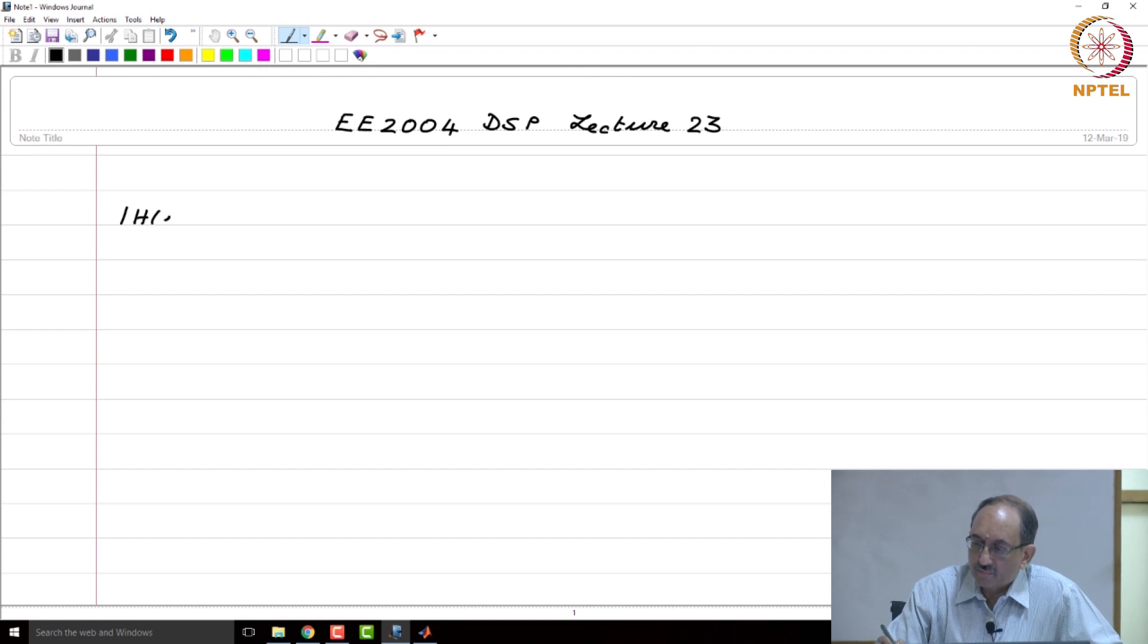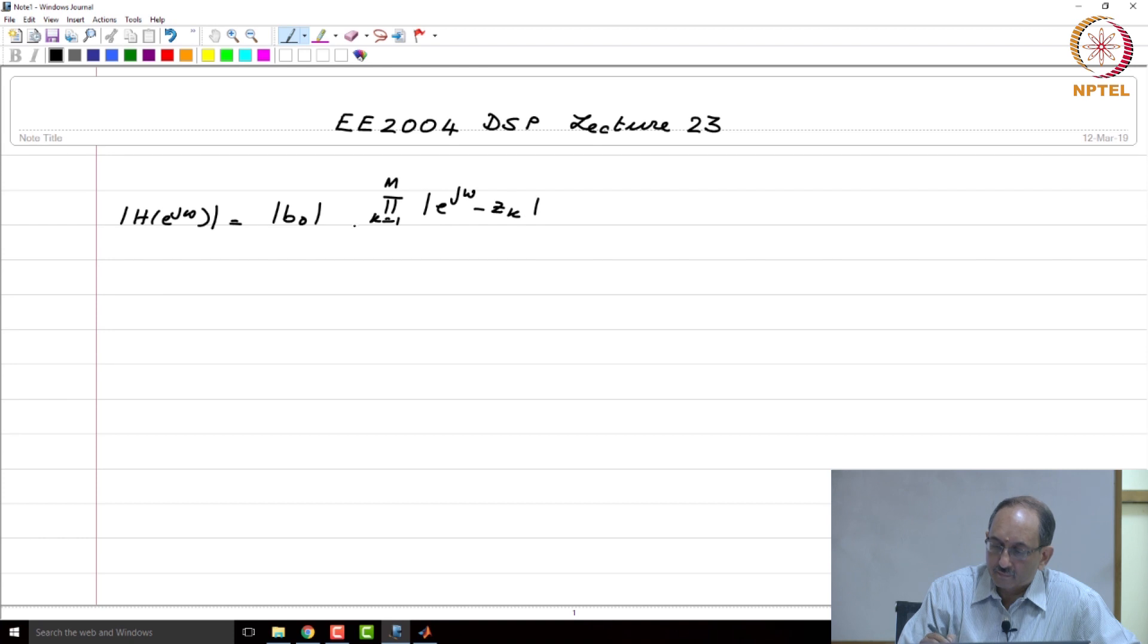So we saw that the magnitude can be written like this, k going from 1 to n, magnitude of e to the j omega minus p k. And immediately the geometric interpretation associated with the difference of two complex numbers gives rise to the picture that we had described yesterday.